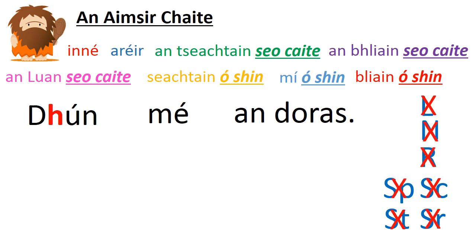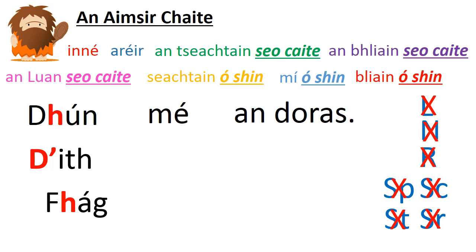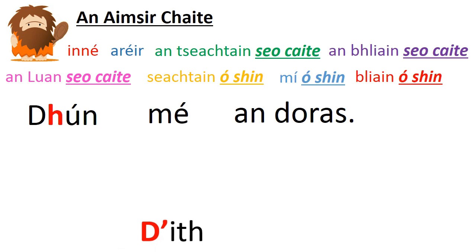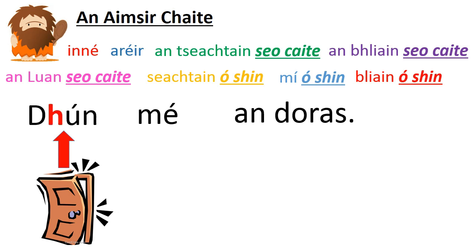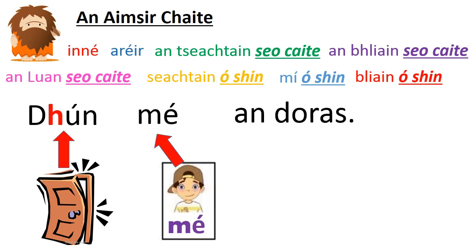For vowels, our séimhiú is a D-apostrophe — so 'a' becomes 'd''. For the letter F, it is a consonant and it does take a séimhiú, but that séimhiú would turn 'fh' into a vowel sound, so it also gets the D-apostrophe that the vowel gets. Just like an English sentence, every Irish sentence will have a verb — in this case it's 'dún', to close or shut — and a person, in this case 'mé', me.